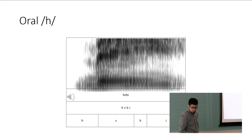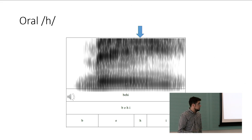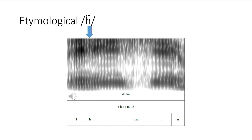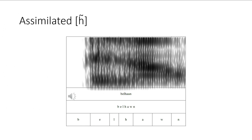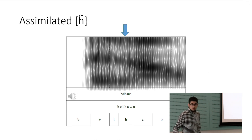This is the word BEHEY — this is the H here, and it's difficult to see because the H is really vocalic, very vowel-like. The same is true for IGISIN, which shows an etymologically nasalized H — very vocalic. And the last one, BELLHOUN, shows an H that was etymologically oral but is assimilated to a following N, so it is nasalized as a result of phonetic articulation.